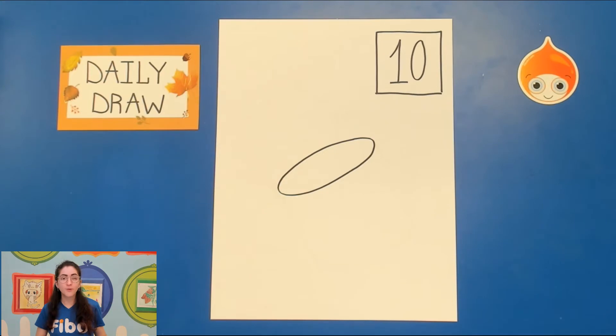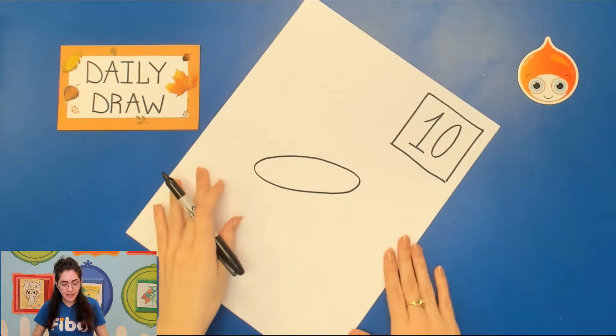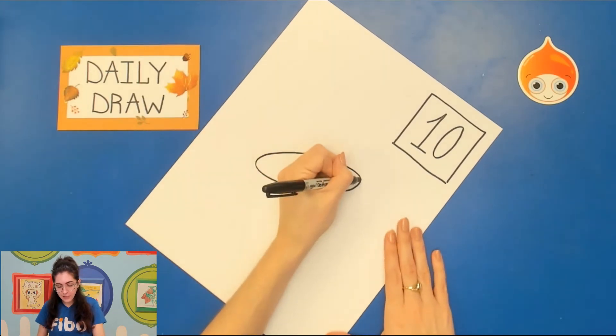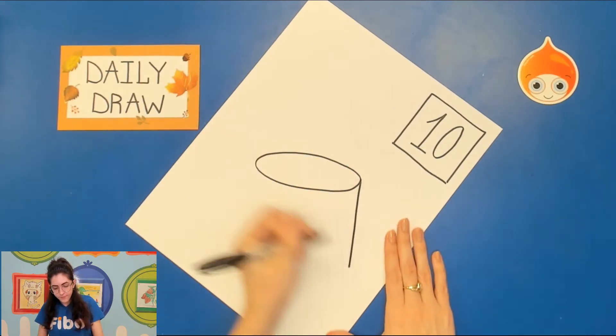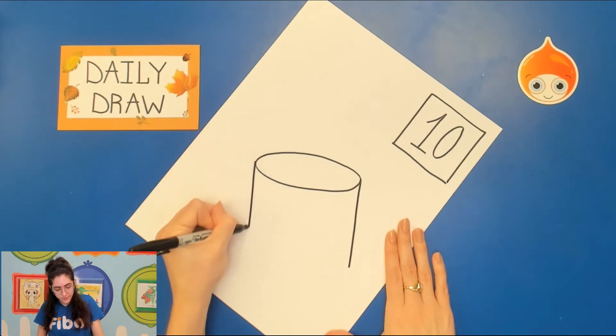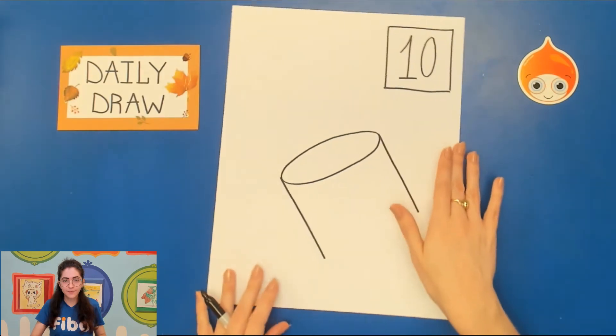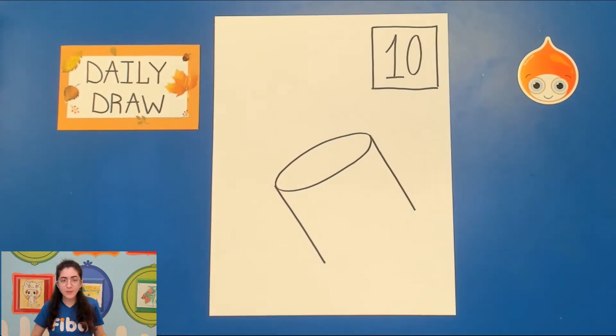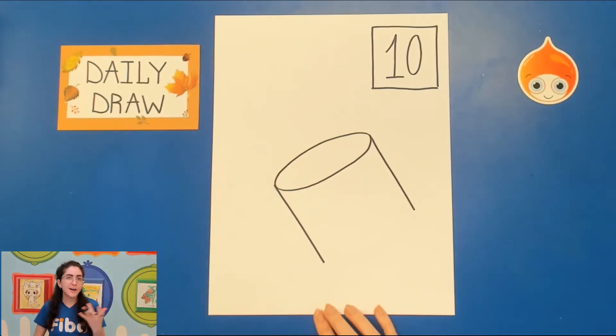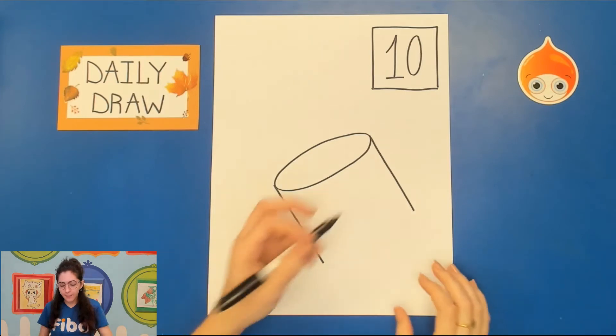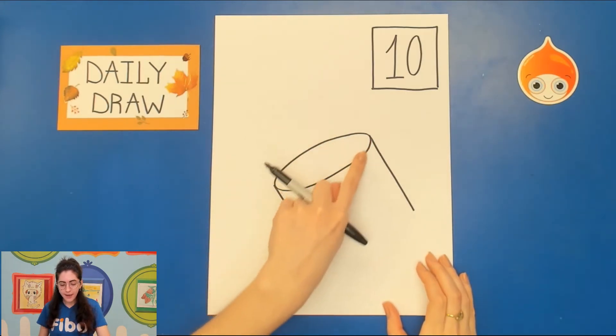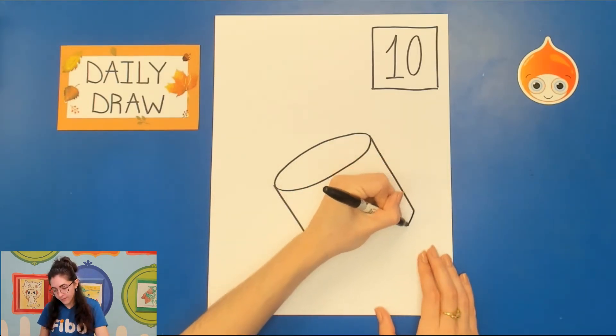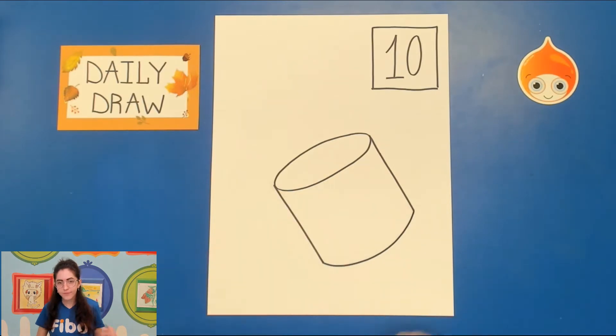Once you've got that oval we're going to go ahead and on either side draw two straight lines coming down. If you have to turn your paper so that you can get these lines in the right spot please feel free. I want them the same length. Now when we end the cylinder we don't want to draw a flat line. If we drew just a straight line across our object would look two dimensional and we don't want that. So we actually want this line on the bottom to match the one that's on the top. If this line is curved this line needs to be curved. And now we have a shape.